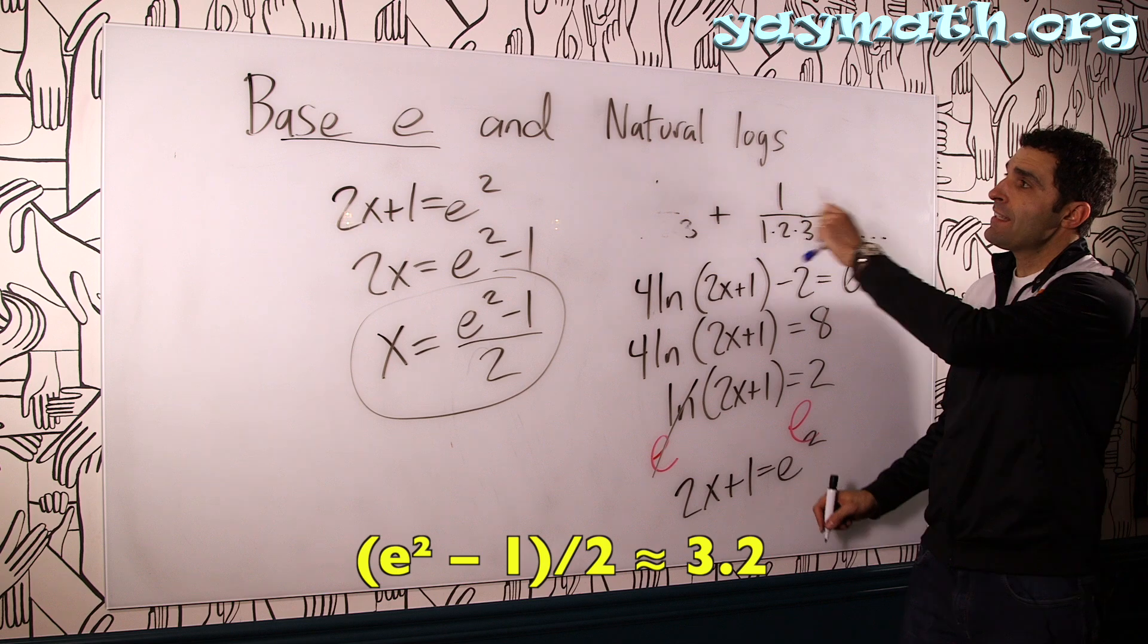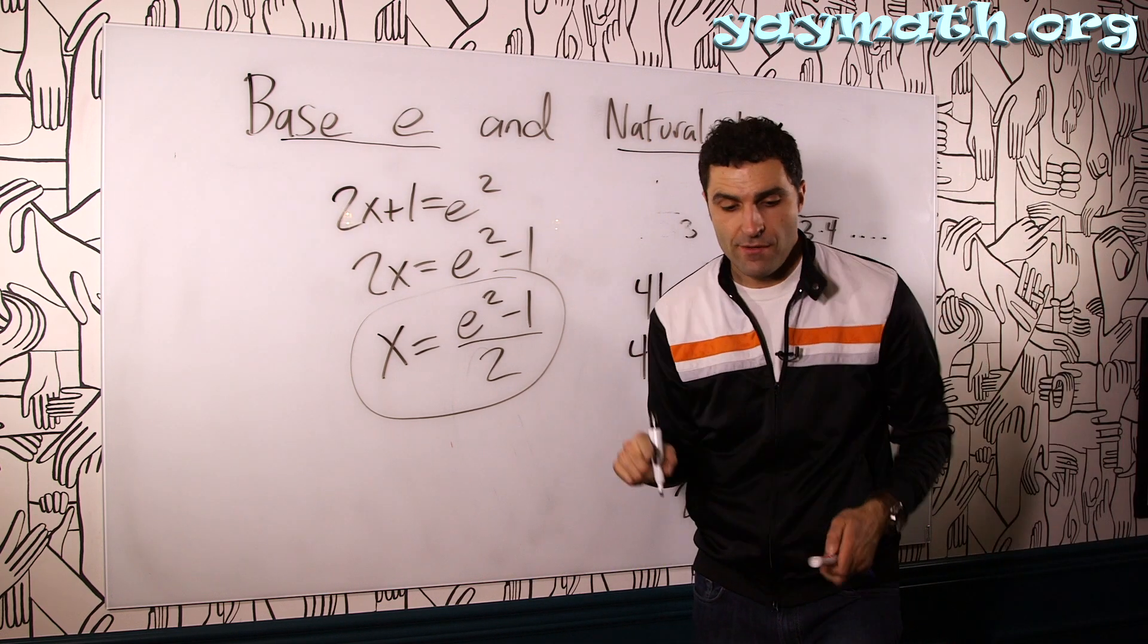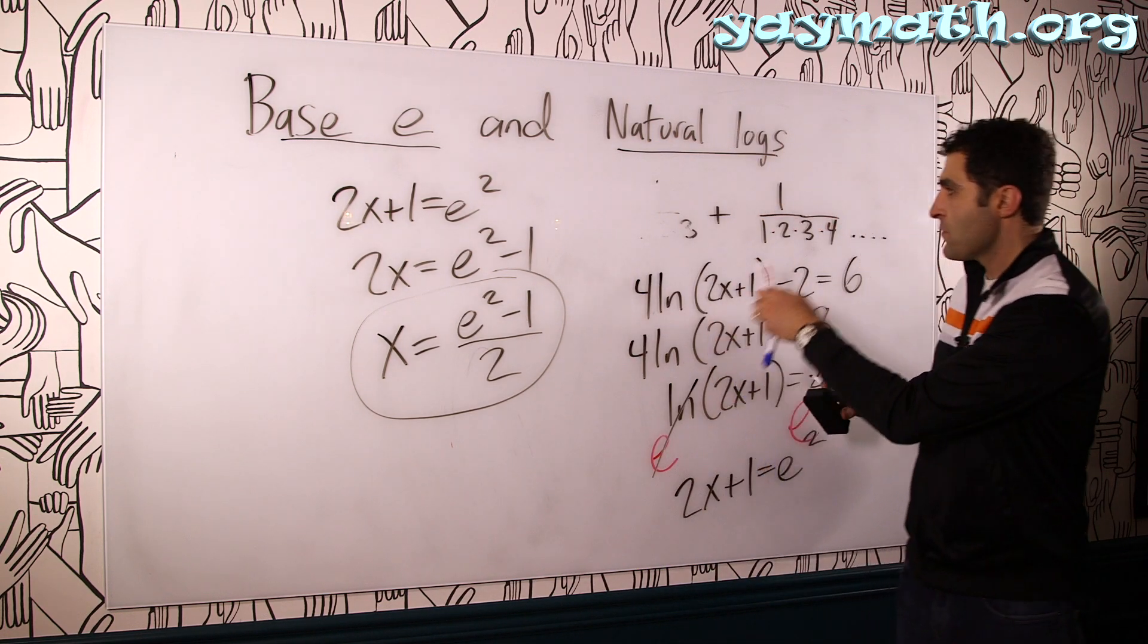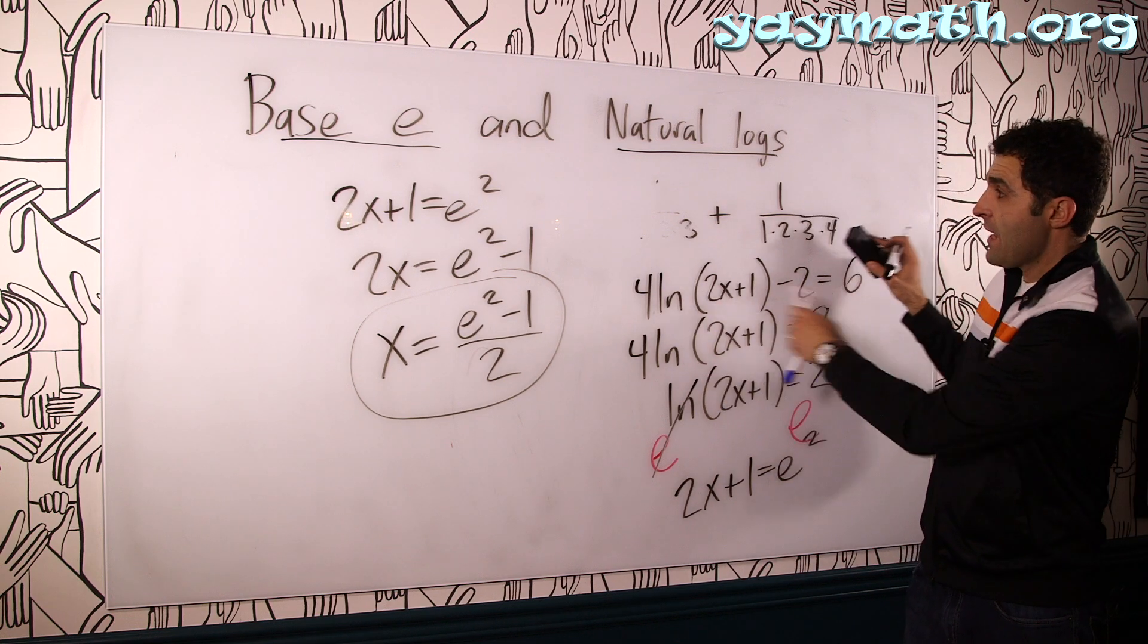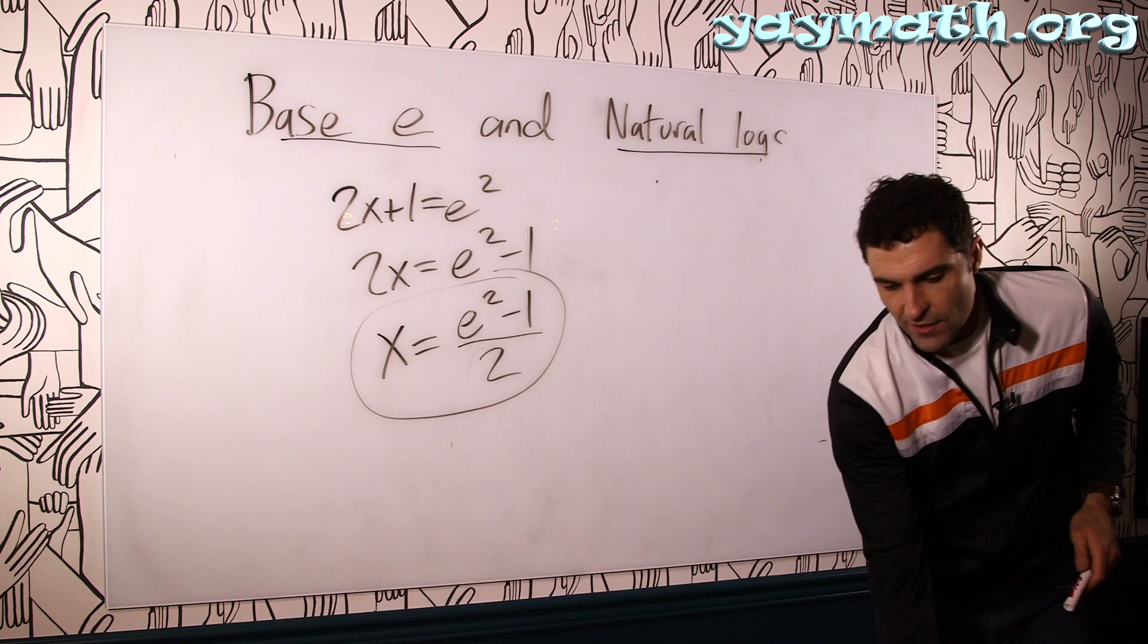So you use E and LN, natural logs and E, to cancel each other out whenever you're solving an equation. So that was one that was given as LN.